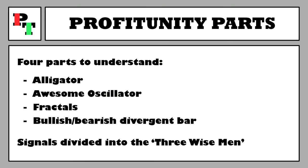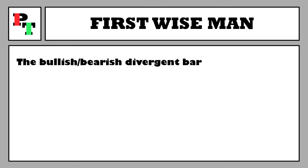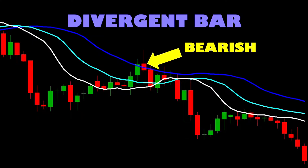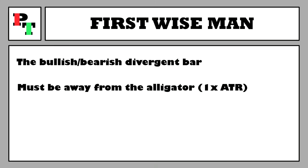Bill Williams calls the three entry signals of Profitunity the Three Wise Men. Wise Man the First is the bullish or bearish divergent bar. The rule is that we need the divergent bar to be away from the Alligator indicator — not on top of it. Bill Williams doesn't specify a consistent distance, but simply says the further away it is the better.